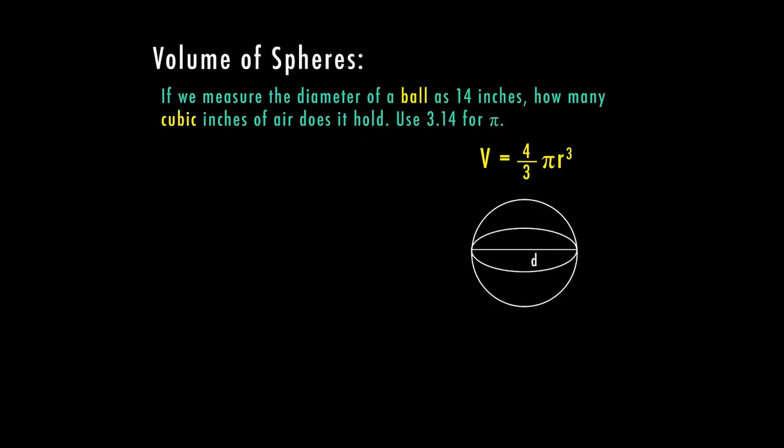If we were to measure the diameter of a ball as 14 inches, how many cubic inches of air does that ball hold? And we're going to use 3.14 for pi. So let's go ahead and fill in our formula. Volume equals four-thirds times pi. Again, I'm using 3.14 times r.